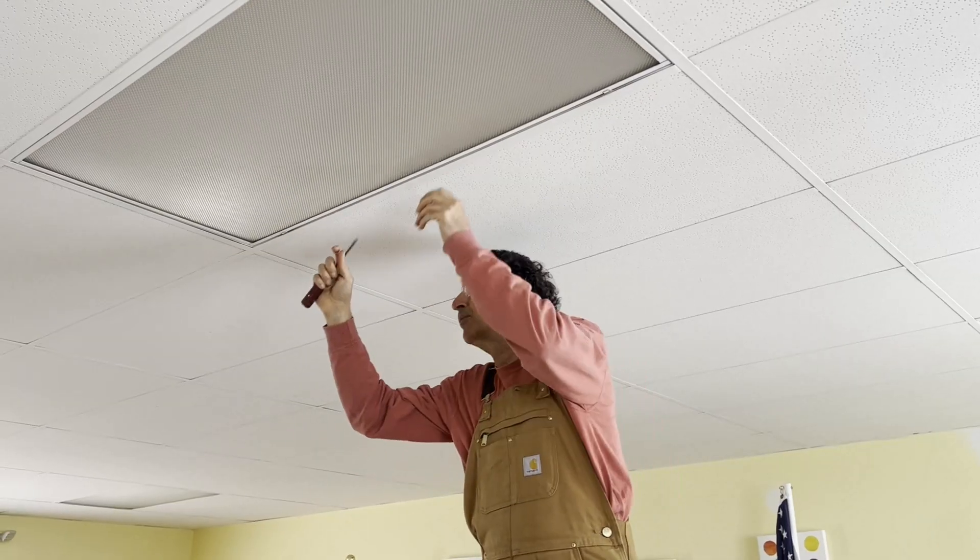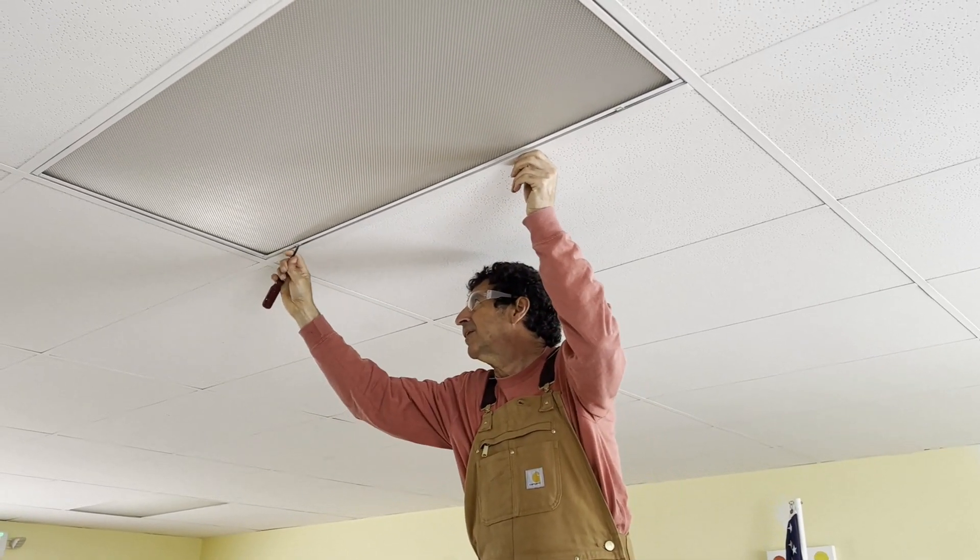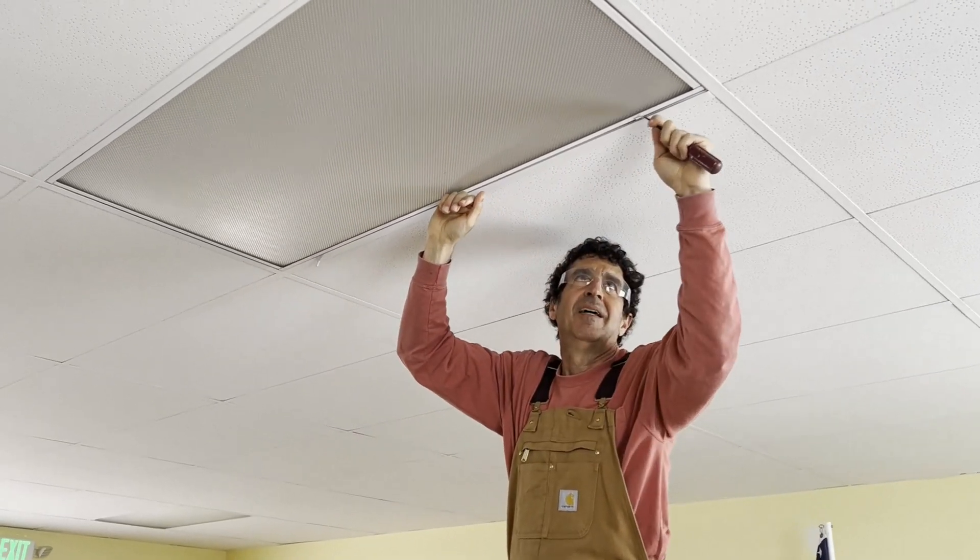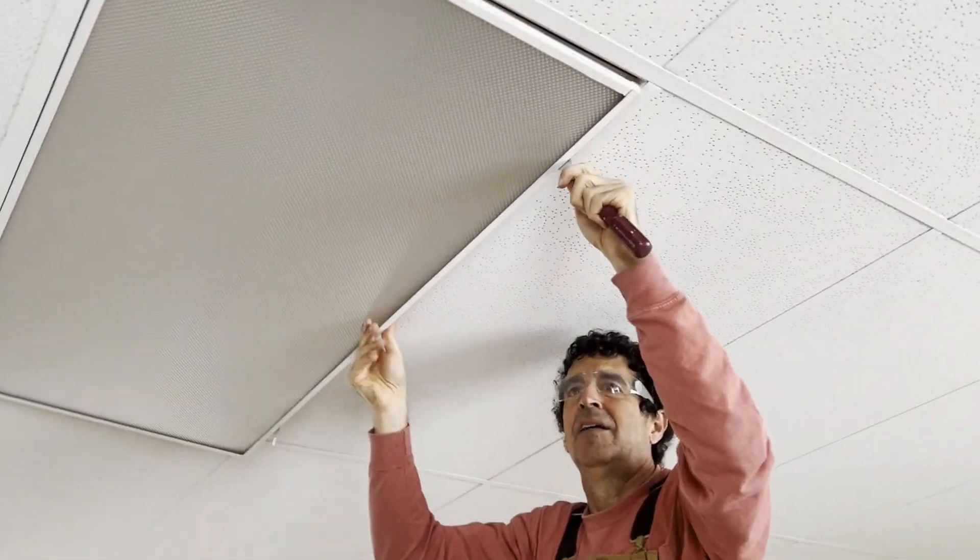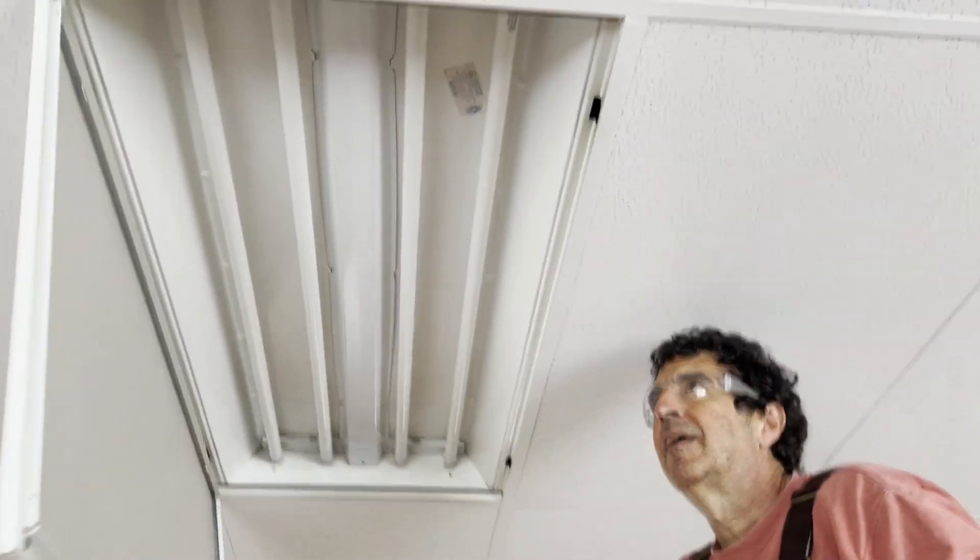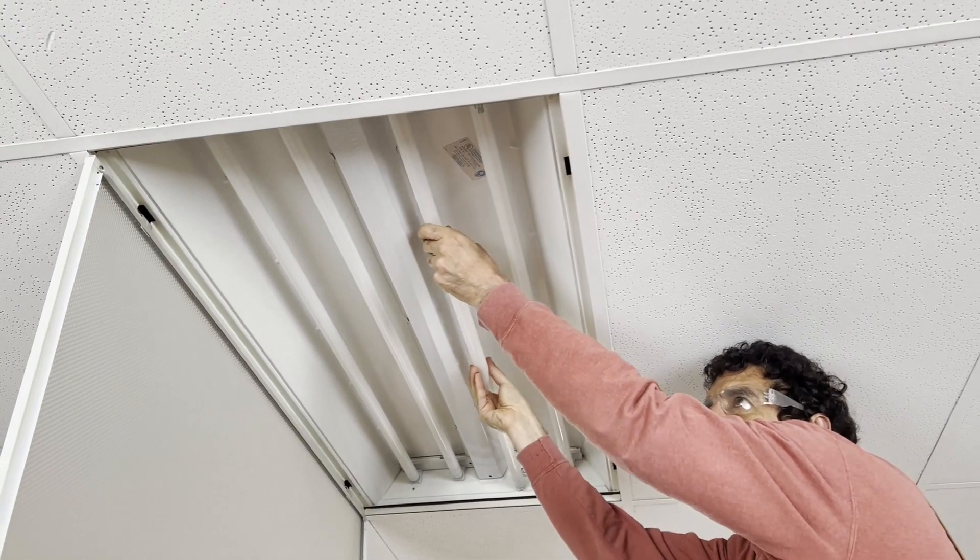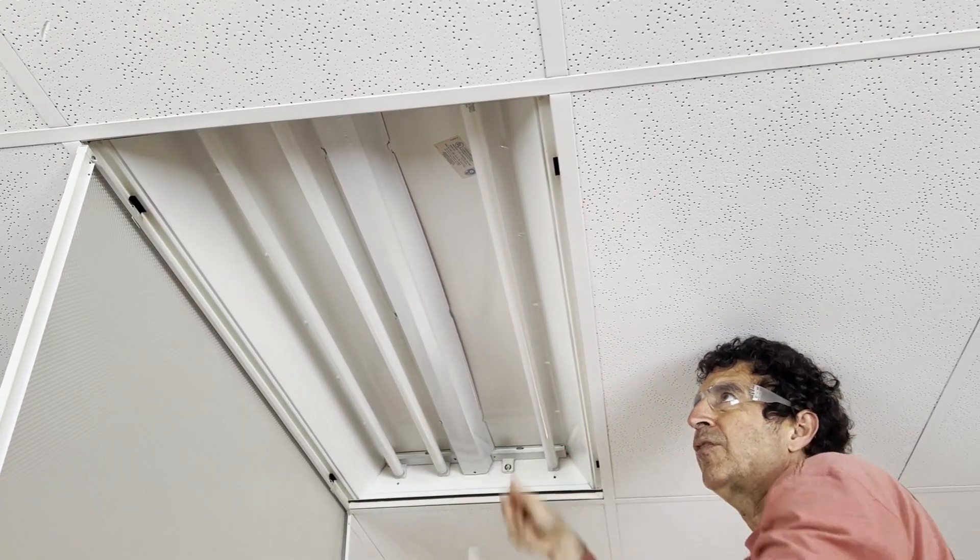First, we're just going to remove these clips here. They're a little fingernail breaker, so we'll just use a screwdriver. Swing this down, get access to the old fluorescent bulbs, which we have in a quarter twist.